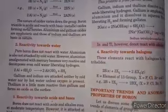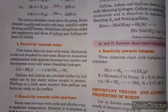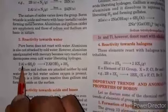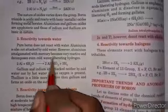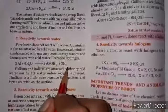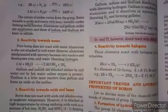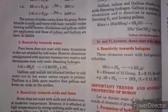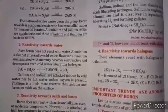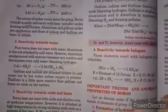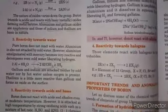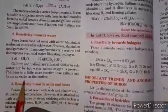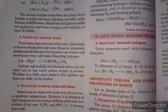Aluminum amalgam is very reactive and it easily decomposes even in cold water liberating hydrogen. When aluminum amalgam reacts with water it forms aluminum oxide along with hydrogen gas. Gallium and indium are not attacked by cold water or hot water unless oxygen is present. Thallium is a little more reactive than gallium, so they form oxide on the surface.